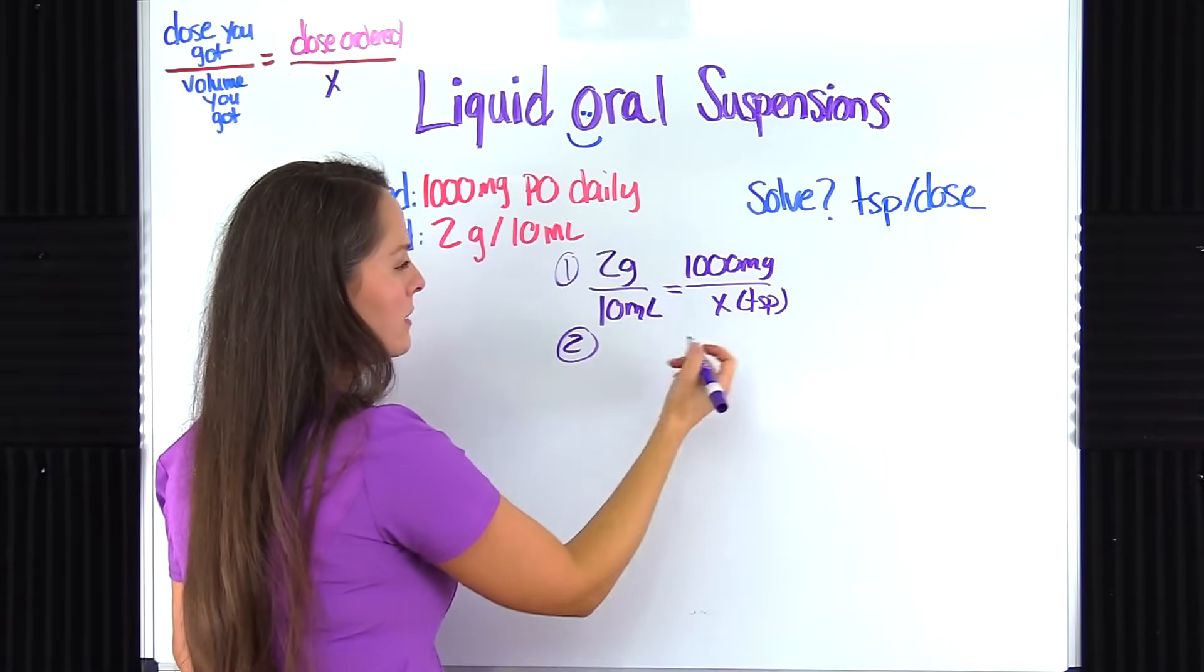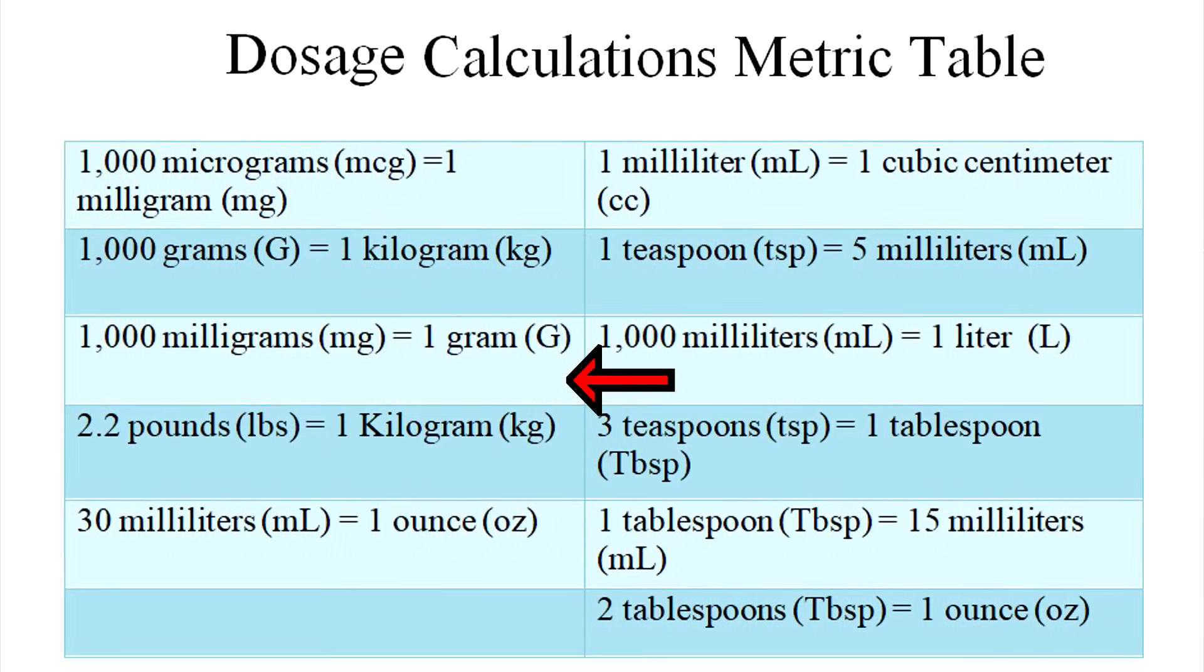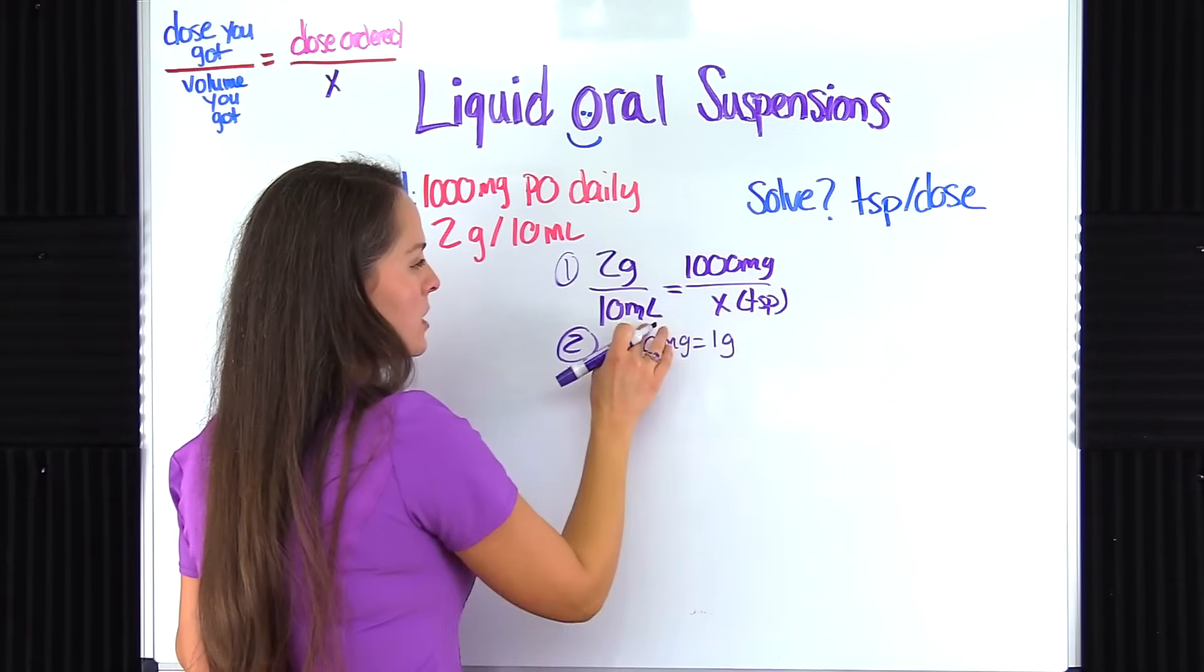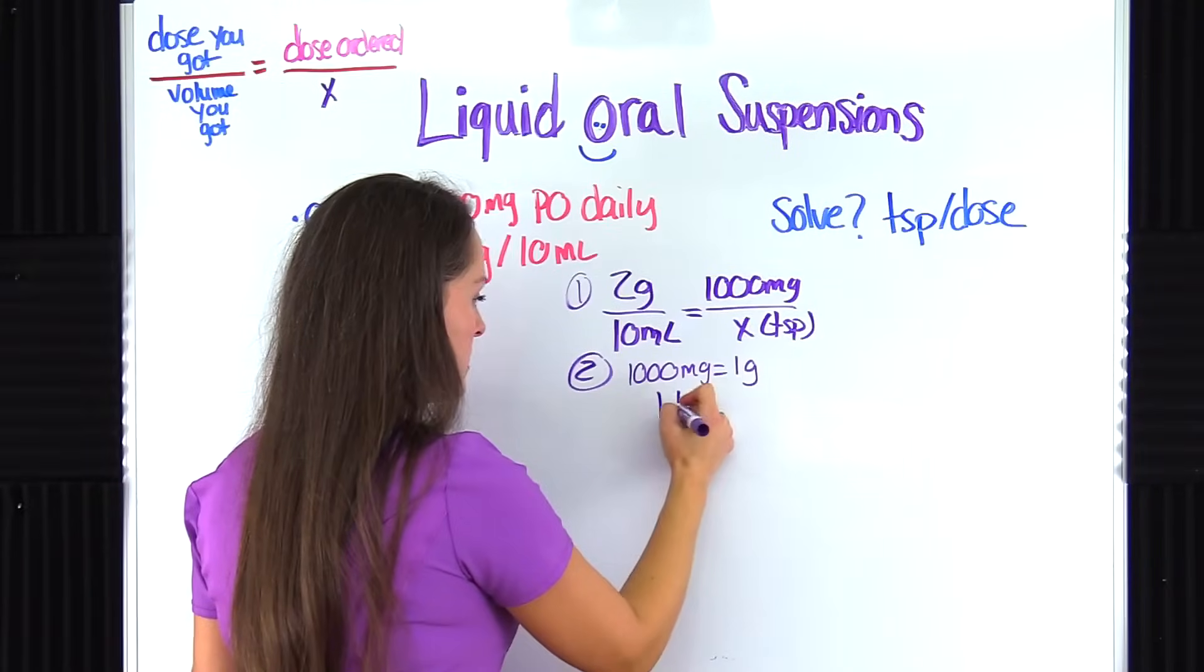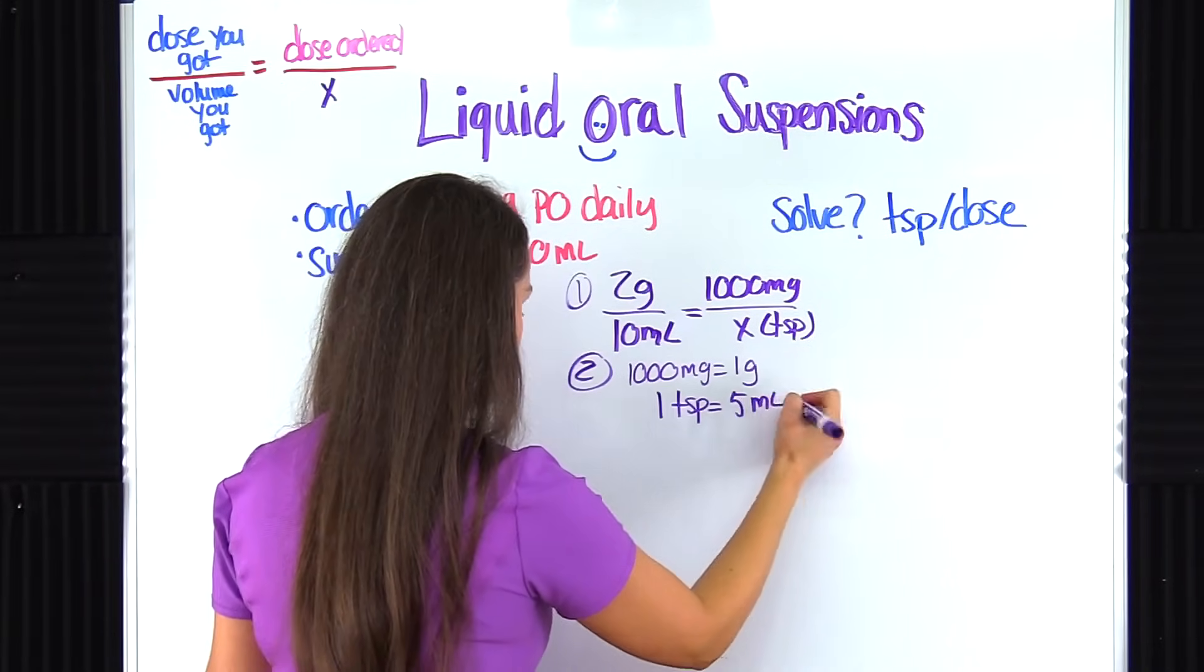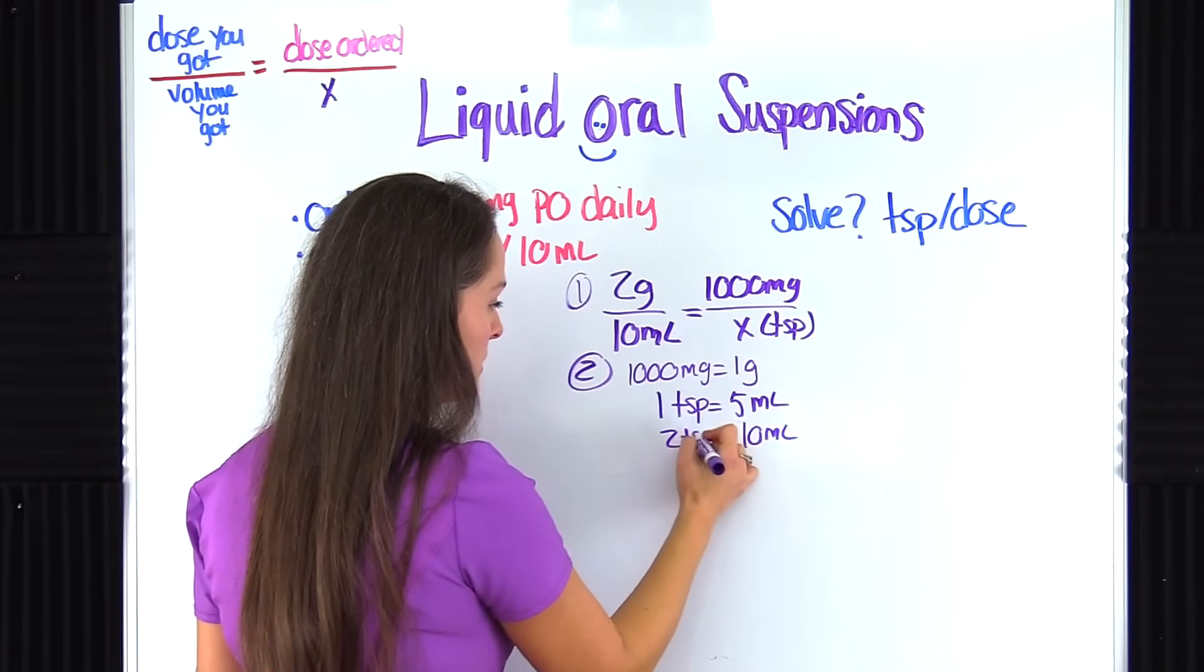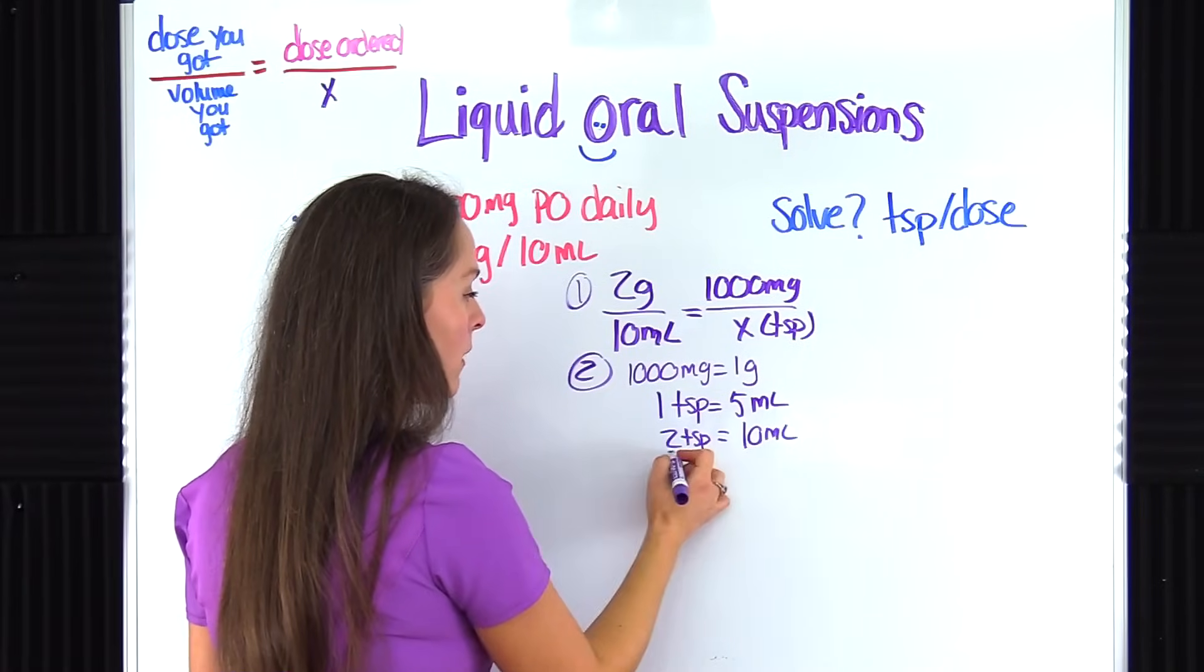Let's convert this into grams. So we know from the metric table that 1,000 milligrams equals one gram. So one gram is going to go here. Now I need to get this into teaspoons because that's where our answer has to be. So from the metric table, I know that one teaspoon is equal to 5 milliliters. So if I have 10 milliliters, that's going to give me 2 teaspoons. So 2 needs to go here.